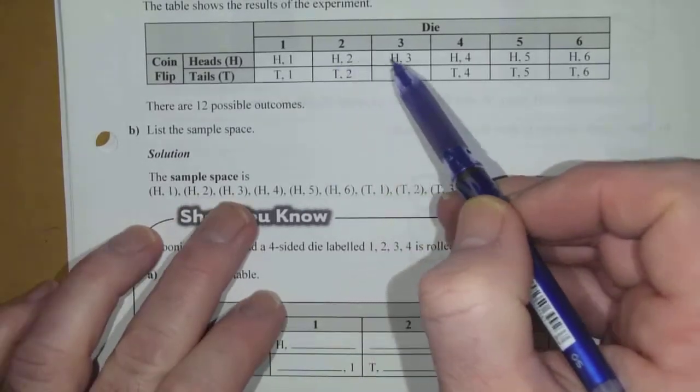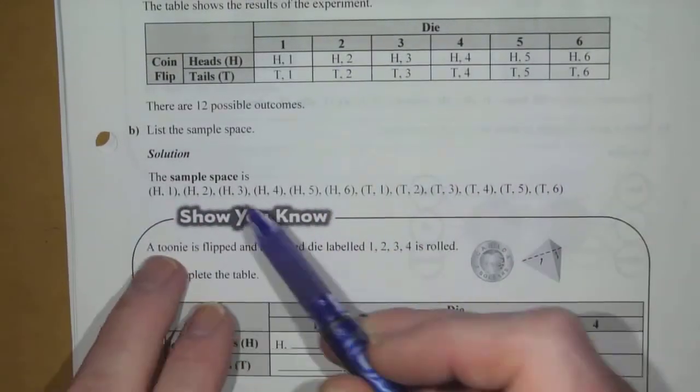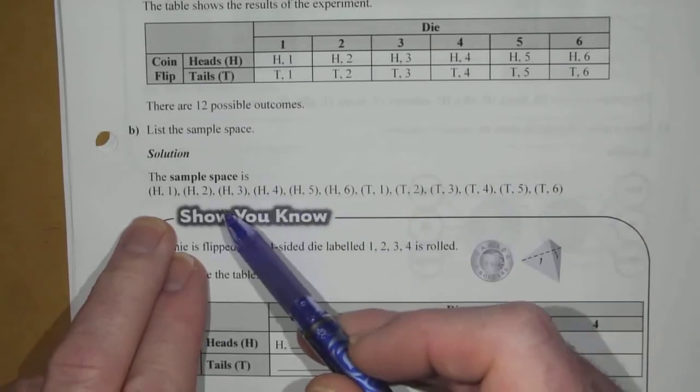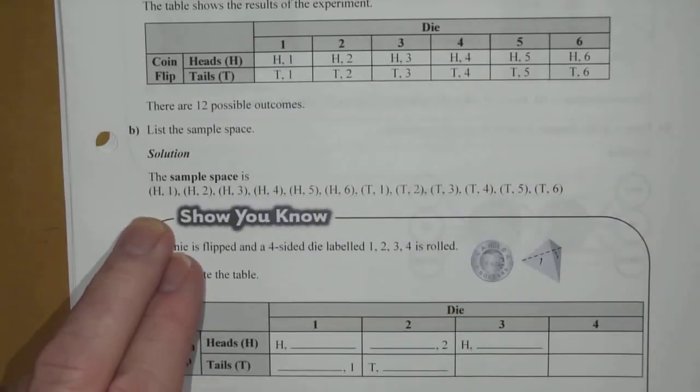H2 is another one. H3, etc. So, all 12 possible outcomes are listed here. So, that's your sample space.